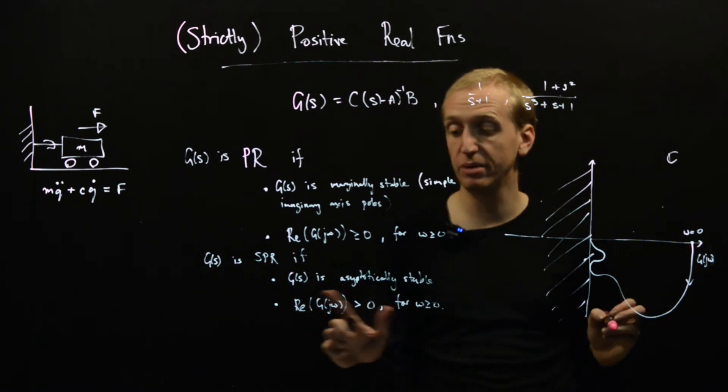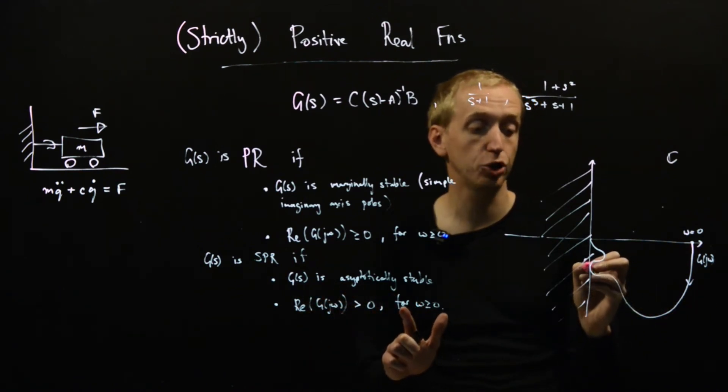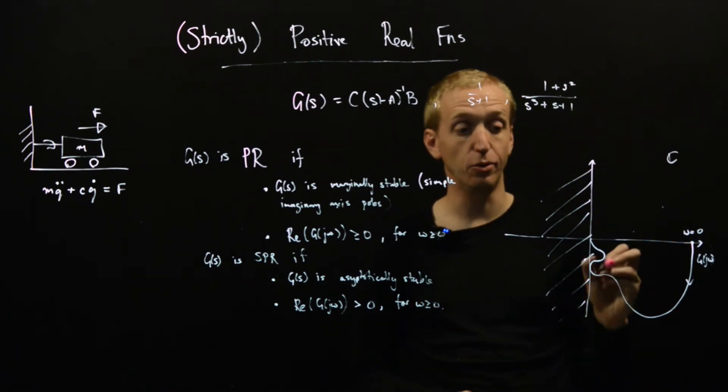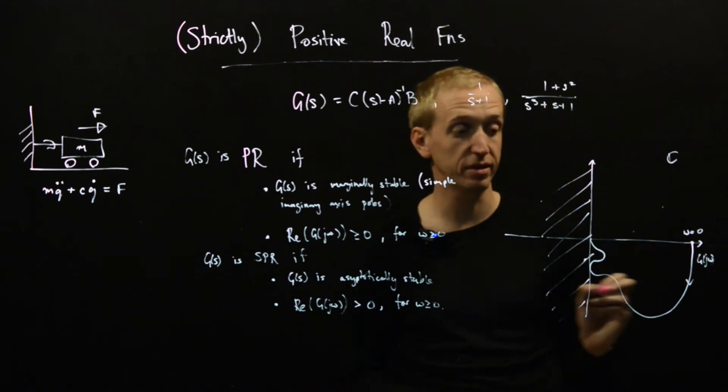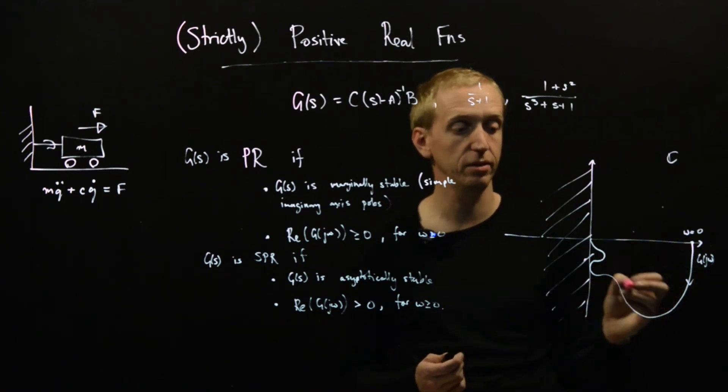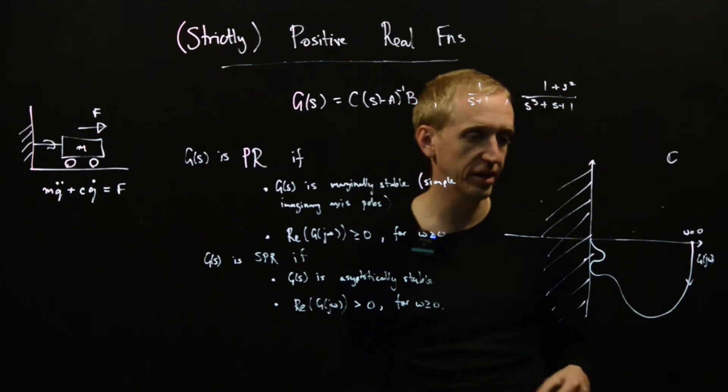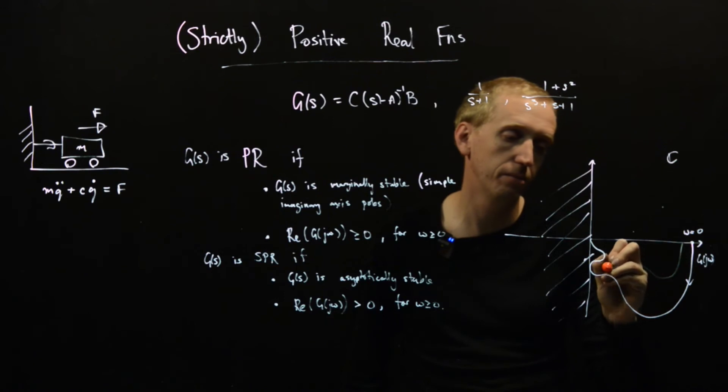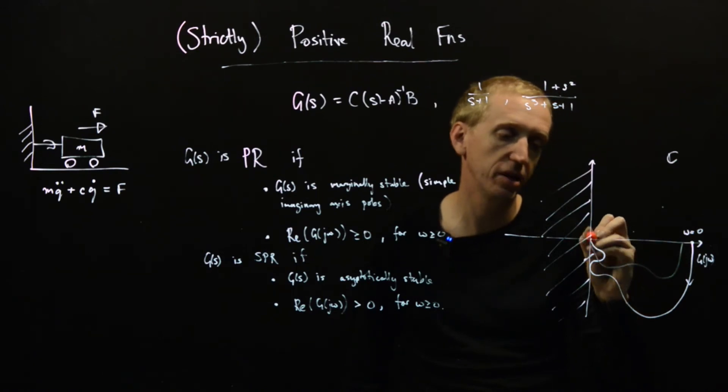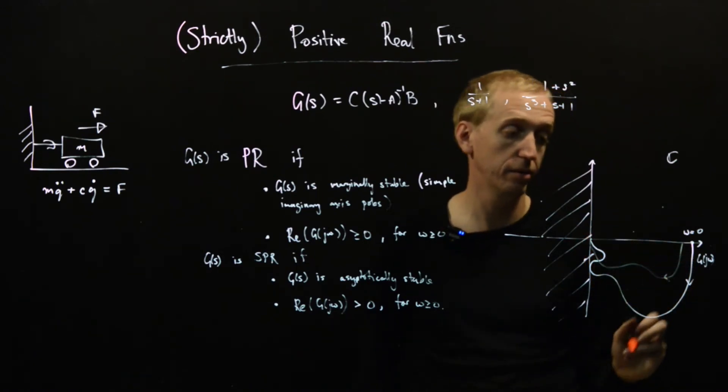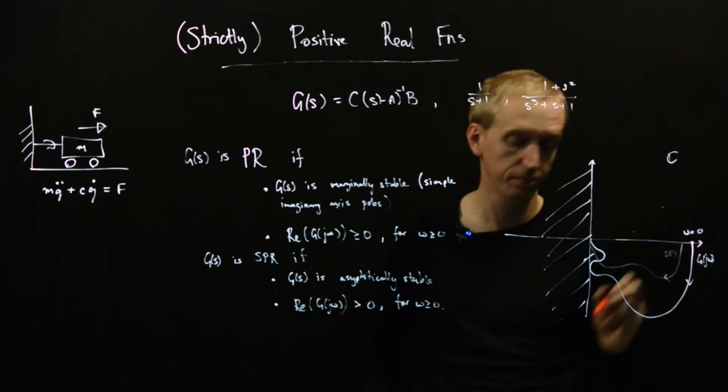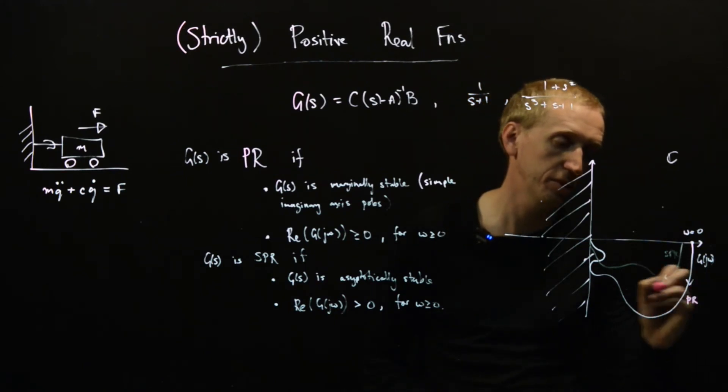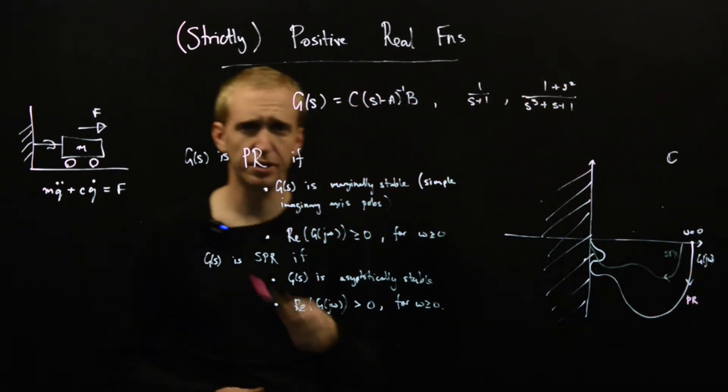And strictly positive real is very similar. It's just we're not allowed to touch the imaginary axis now for positive frequencies. You are allowed to come into the origin still, but for all other frequencies, you have to be strictly away. So this would be, for example, this would be an example of something that's strictly positive real. And this one here, this one is positive real. So that's what these mean.